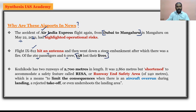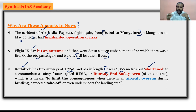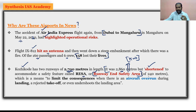160 passengers and six crew were aboard, of whom 158 lost their lives. The airport where the incident took place is Kozhikode, which has a runway of 2,700 meters in length. It was originally 2,860 meters but was shortened to accommodate a safety measure called the Runway End Safety Area (RESA) of 240 meters.